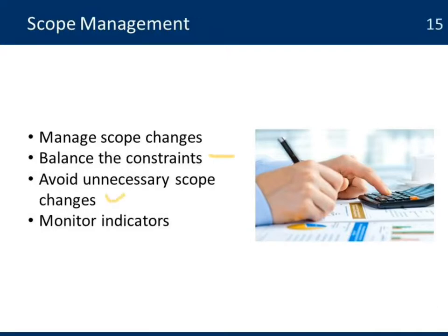Avoid unnecessary scope changes. In many cases, you don't need to add more scope just because there is a request for it. Make sure that whatever you're adding to the project is adding value at the end of the project, meaning it's contributing to the success of the project. And monitor indicators — those are the types of information that will help you know whether or not the project is creating the necessary changes and the deliverables, outputs, and outcomes that were planned.